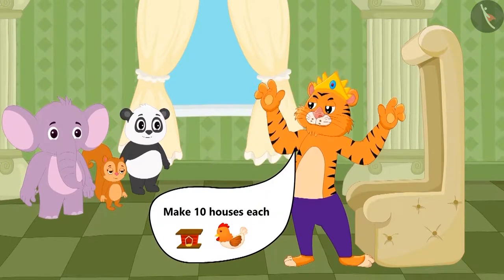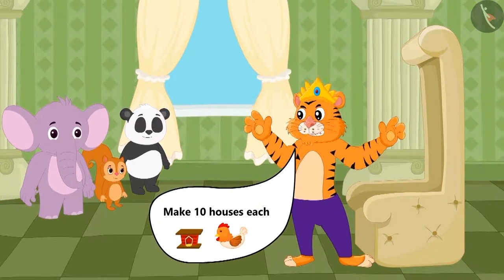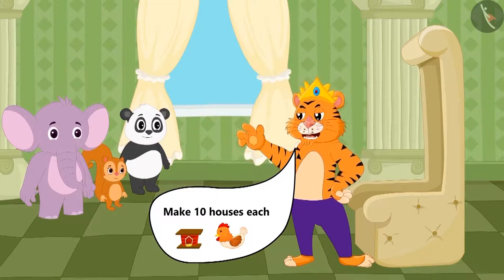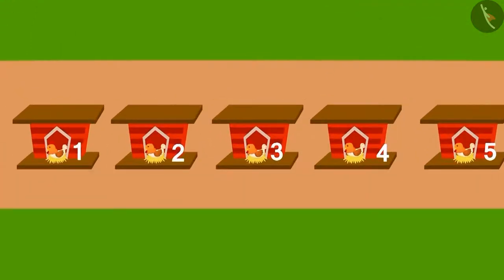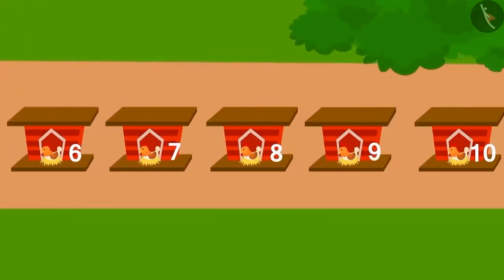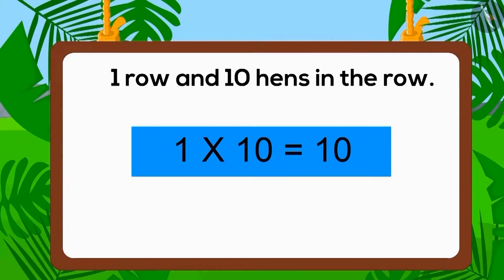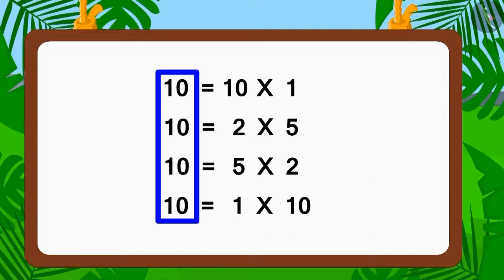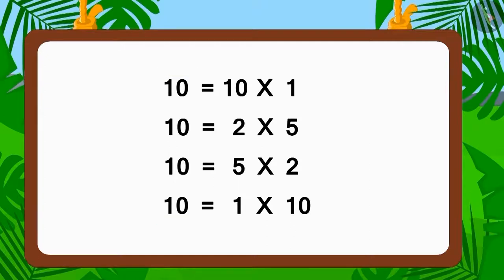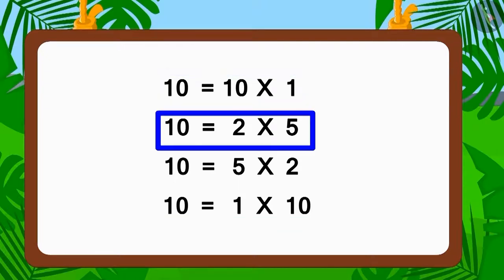Children, as per the conditions stated by the king, can you build the house for hens in any other way? Absolutely right — we can also build the house by placing ten hens in one row. So here we have written ten as four different forms of multiplication.